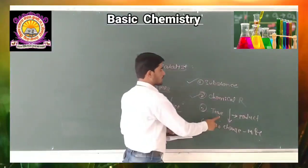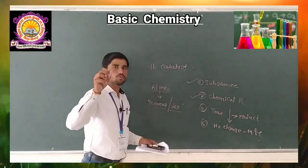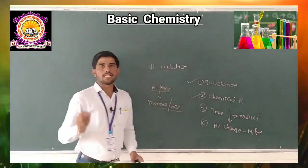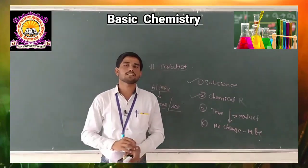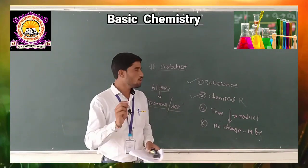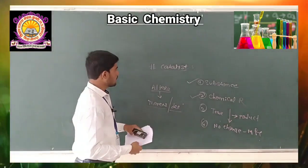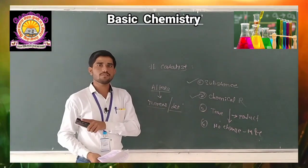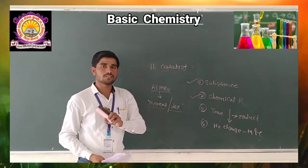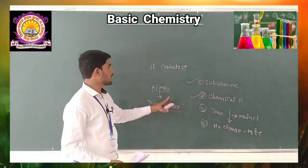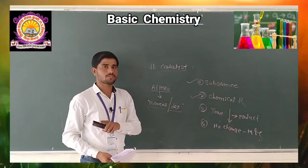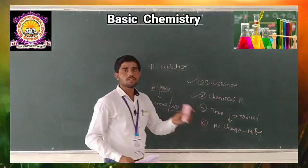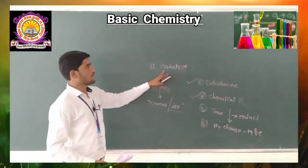Due to the catalyst, the time span of the chemical reaction goes on decreasing, and at the same time the rate of reaction goes on increasing. But at the end of this chemical reaction, there is no change in the mass and composition of the reactant. Catalyst is nothing but a chemical substance used in chemical reactions that alters the rate of the chemical reaction, but due to its use there is no change in mass and composition of the reactant.